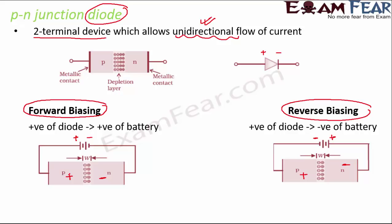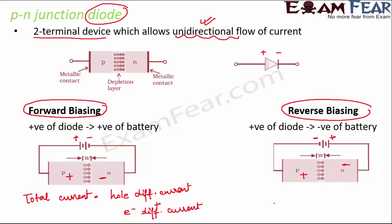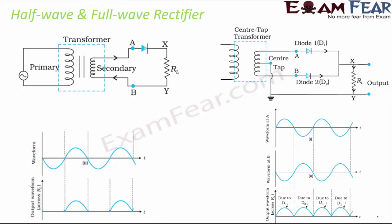In forward biasing, the total current equals hole diffusion current plus electron diffusion current, since majority current is due to diffusion. In reverse biasing, the total current equals hole drift current plus electron drift current, but this drift current is very negligible, so there is almost no current flow in reverse bias.